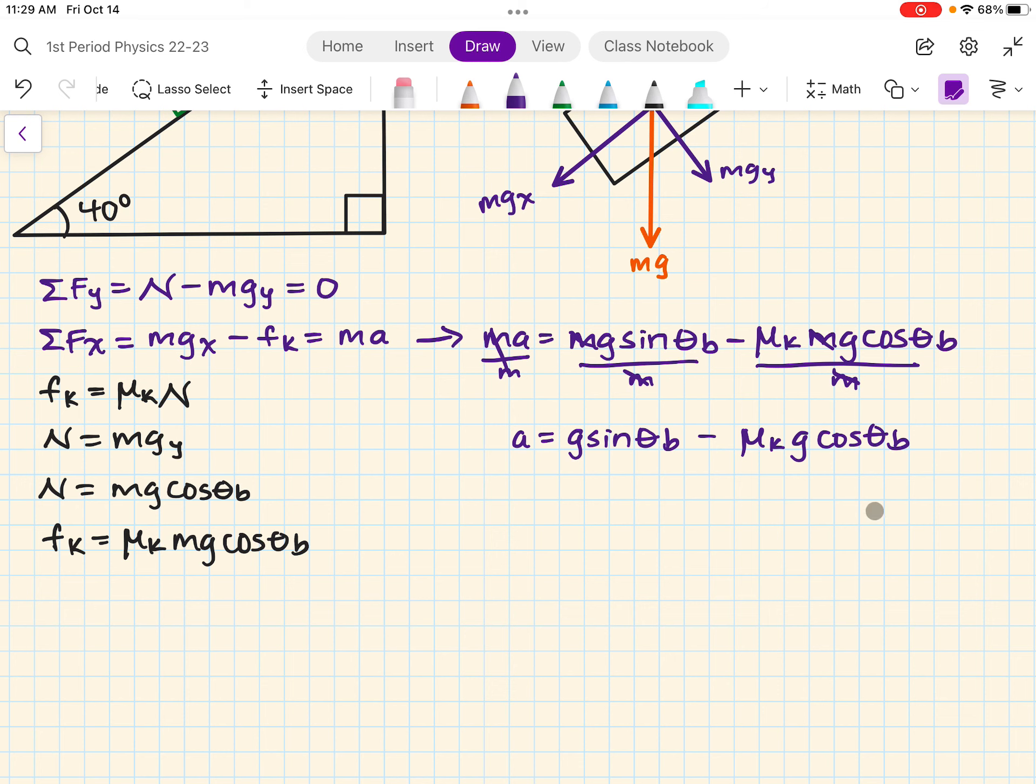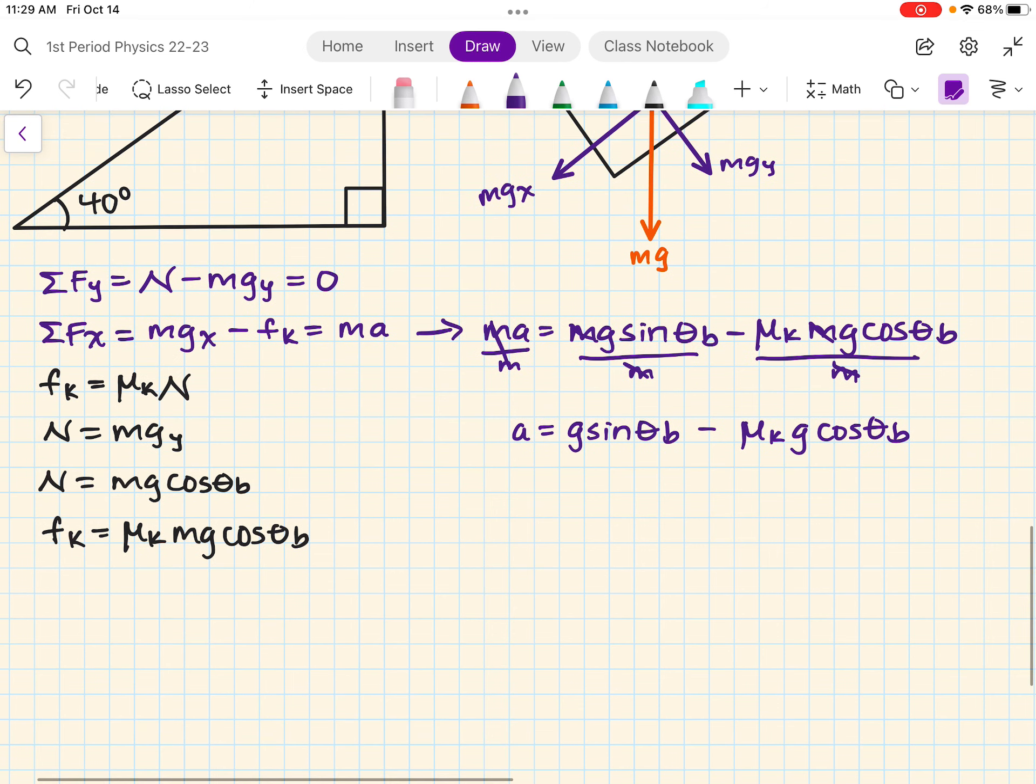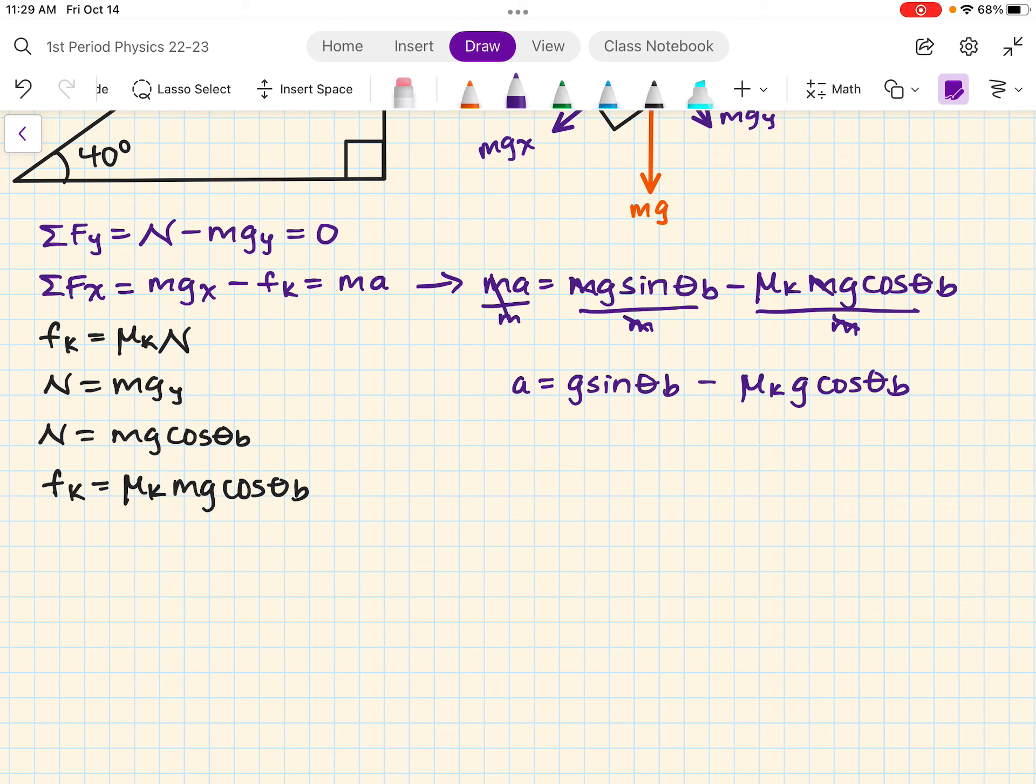Just to have fun with the algebra, I'm going to factor out the g acceleration due to gravity. So my acceleration would be g times sine theta b minus coefficient of kinetic friction cosine theta b. There you go.